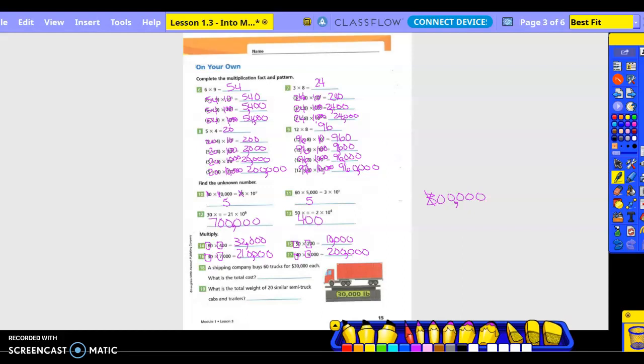All right, number 18. This is lesson 1.3 into math, fifth grade, and part two of our recording. Number 18, it should be coming, you guys. 60 trucks for $30,000 each. What is the total cost?